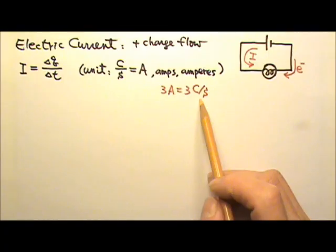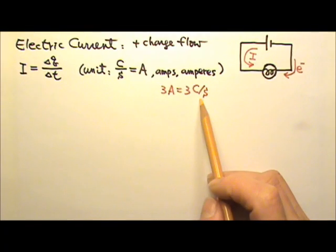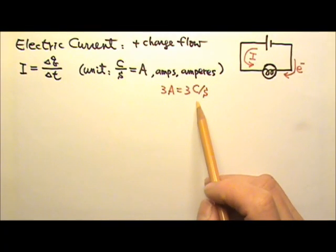Coulombs may be a huge unit for static charge, but it's common to have a few Coulombs of charge flowing through a wire every second.